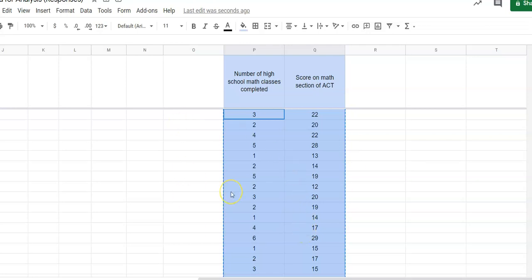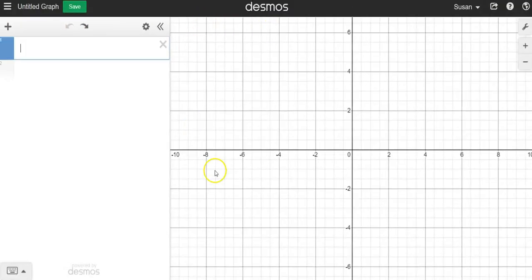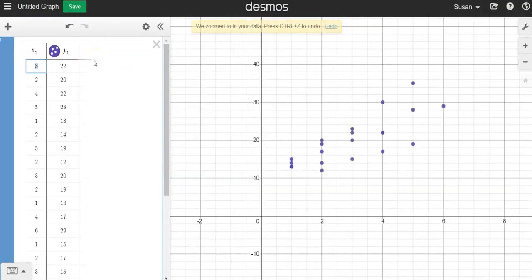So I've basically highlighted all the numbers, control C copies, and I would click on my Desmos graphing calculator. You can see it, control V will basically create a table.